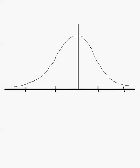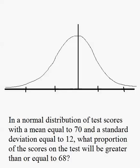Hello. We're looking at a bell-shaped curve here, a normal distribution. In this problem, we're going to be asked to find the area under the curve and report it as a proportion. Here's our question: In a normal distribution of test scores with a mean equal to 70 and a standard deviation equal to 12, what proportion of the test scores will be greater than or equal to 68?